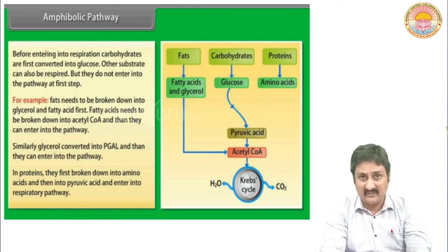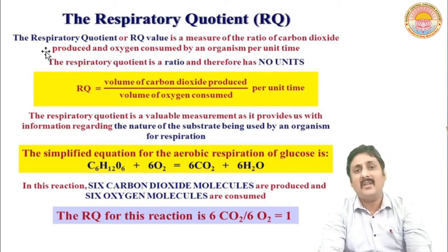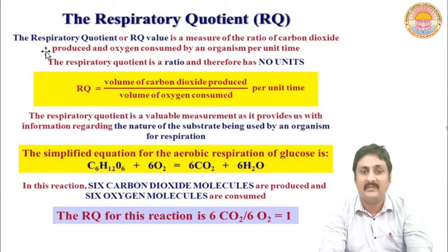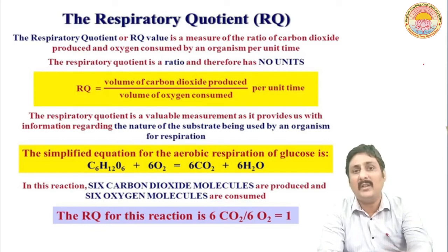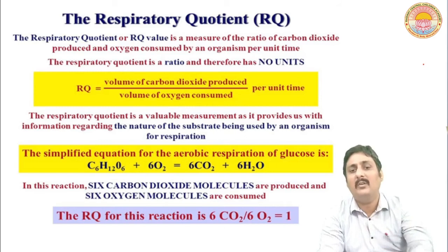That is the reason why respiration is considered an amphibolic pathway. Now let us talk about the respiratory quotient, or RQ. It is the volume of carbon dioxide produced divided by the volume of oxygen consumed per unit time. Since it is a ratio, it does not have any units.